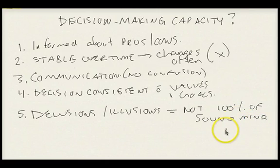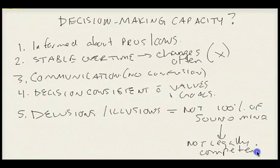If someone is not 100% of sound mind, legally, they're not competent to make a decision. Make sure you understand the steps that we need to take in order to determine if someone is of decision-making capacity.